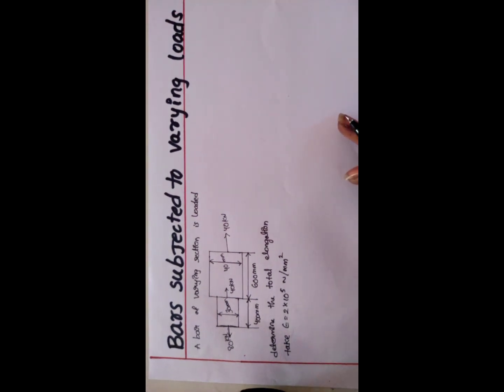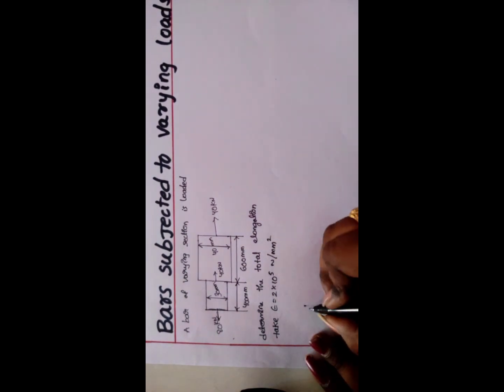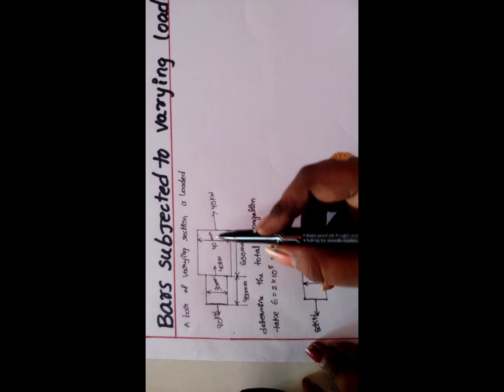For starting, we will divide into two sections. This is section 1 with diameter of 30 mm with 80 kN, this side is 40 kN with a length of 400 mm. Now next for section 2.